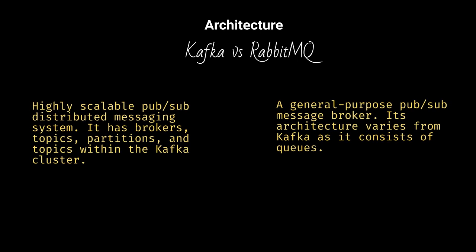Kafka is a highly scalable pub/sub distributed messaging system. It has brokers, topics, partitions, and topics within the Kafka cluster. RabbitMQ is a general-purpose pub/sub message broker whose architecture varies from Kafka as it consists of queues.